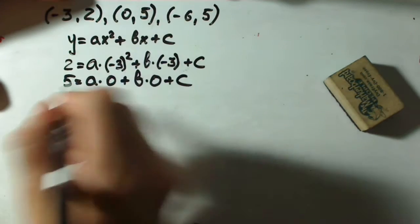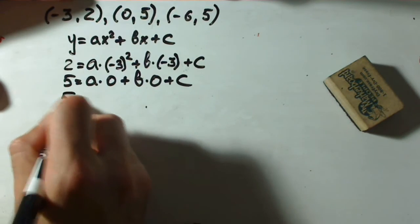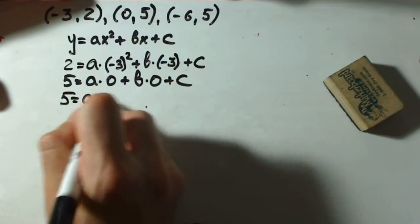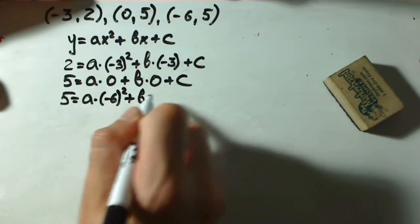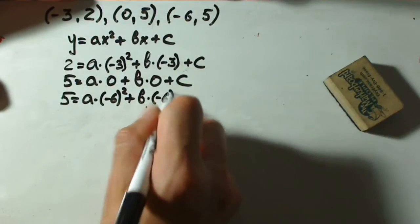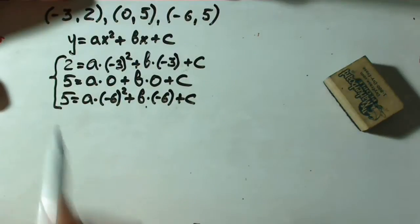Next point, negative 6, 5. Again our y value is 5 and x is negative 6. a times negative 6 squared, plus b times negative 6 plus c. And this is our system of equations.